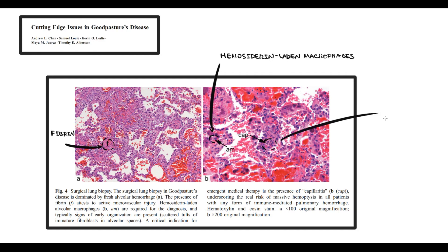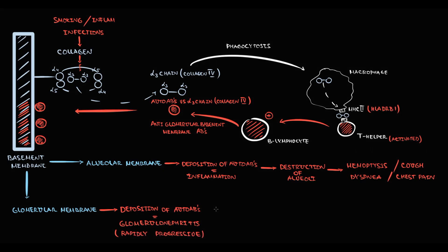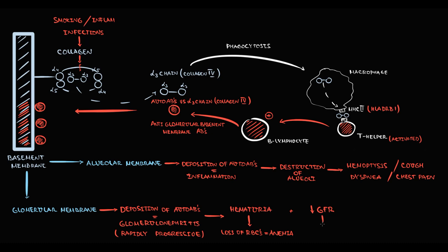An important sign is also inflammation of the capillaries, because damage to capillaries greatly increases the risk of potential hemorrhage. In the glomerular membrane, deposition of autoantibodies causes inflammation of the glomeruli — usually rapidly progressive glomerulonephritis, which is an extremely dangerous condition. Glomerulonephritis can manifest as hematuria, with the organism beginning to lose red blood cells so that anemia develops. With inflammation of the glomeruli, the glomerular filtration rate begins to decrease, and as a result oliguria can develop.